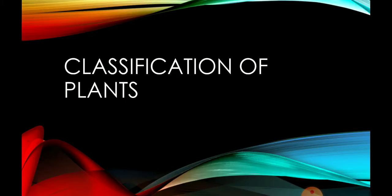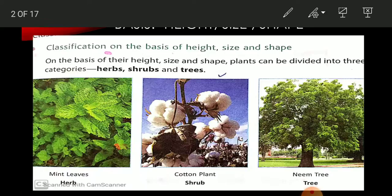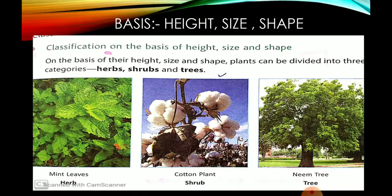अब plants भी हमारे बहुत सारी तरह के हैं, तो इसी तरह से देखते हुए, उनकी properties देखते हुए, we are classifying plants into different categories. So we are moving to our categories — the first one is on the basis of height, size and shape. Height, size and shape के according हम देखते हैं, so we are having three main categories: herbs, shrubs and trees.